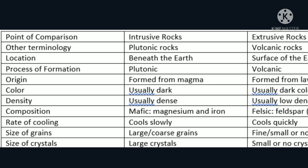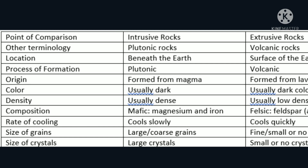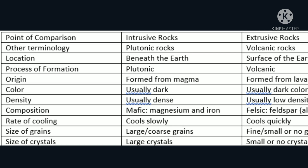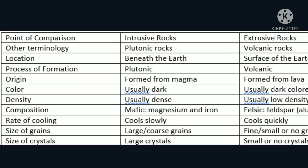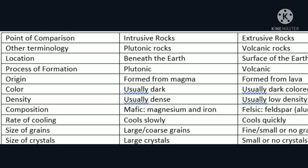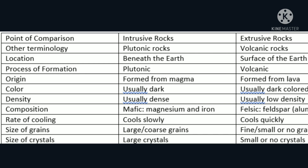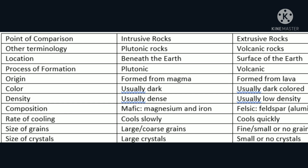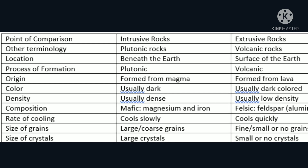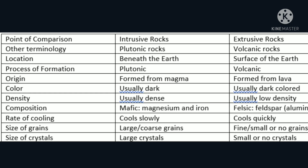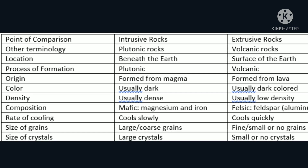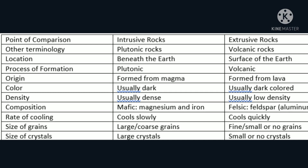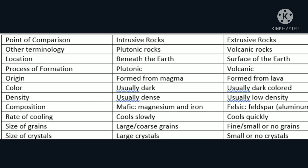Para sa color, intrusive are usually dark, while extrusive rocks are light colored. For the density, dense ang intrusive, while low ang density naman for extrusive. For composition, mafic with magnesium and iron para sa intrusive; for extrusive, felsic, usually feldspar at aluminum. Rate of cooling: cools slowly para sa intrusive, at cools quickly naman ang extrusive. For the size of grains, large or coarse grain ang intrusive, while extrusive rocks naman are fine, small, or no grains.